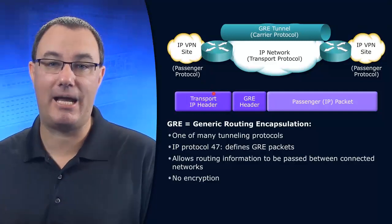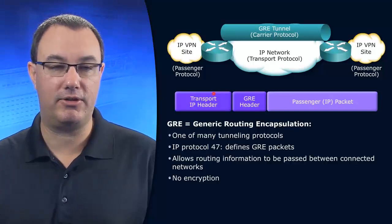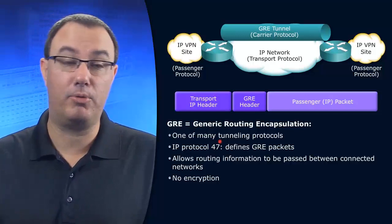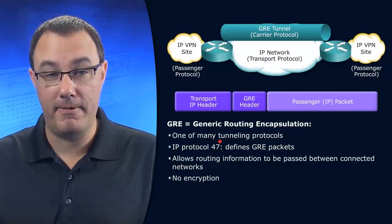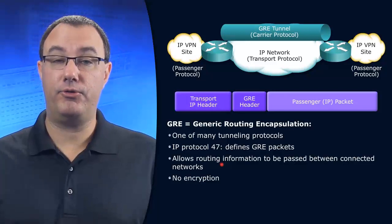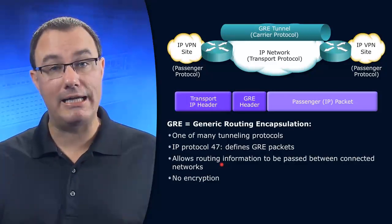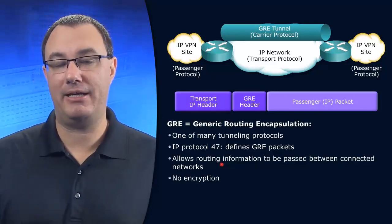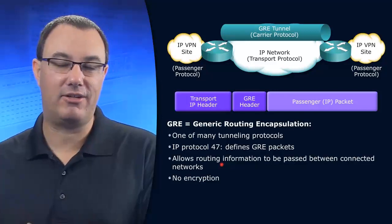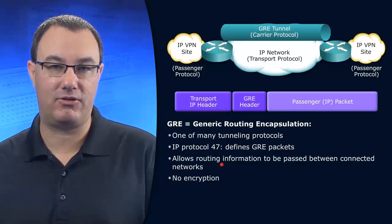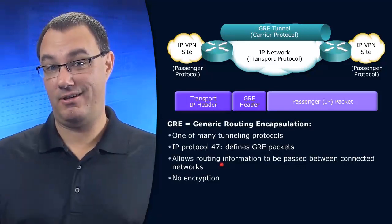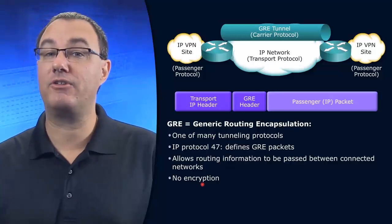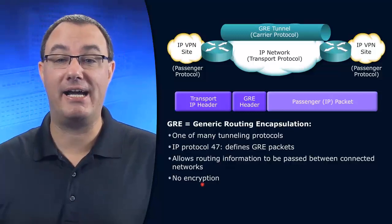GRE is a way that we encapsulate traffic and decapsulate it when it's received. It's got protocol 47, multi-protocol support, very flexible. It allows us to send routing information across. Why? Because routing information has to be multicast or broadcast based. IPsec doesn't like multicast and broadcasts, but GRE is okay with it, and so routing protocols do play nicely with this. There's no encryption services offered by GRE.